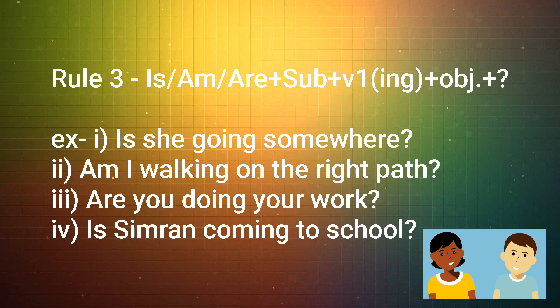Now, rule number three indicates question sentences. The rule is: is/am/are plus subject plus verb's first form along with -ing plus object with question mark. Examples are: Is she going somewhere? Am I walking on the right path? Are you doing your work? Is Simran coming to school?